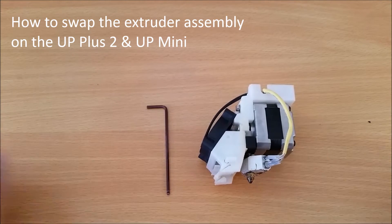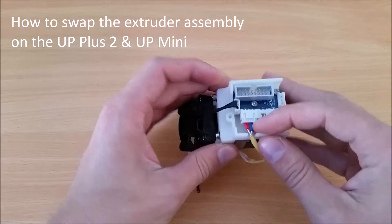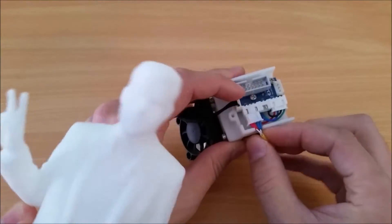To swap over the extruder assembly in your UP Plus printhead, the first thing we need to do is disconnect the extruder assembly by pulling on the white connection here to remove it from the block.